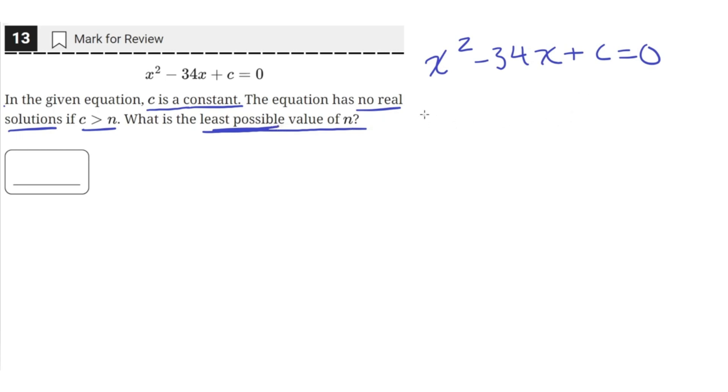So to find the intervals during which the quadratic has no solution, we can find the discriminant which is equal to b squared minus 4ac.